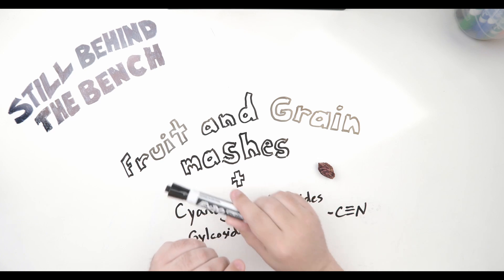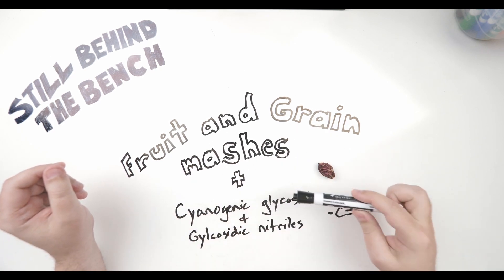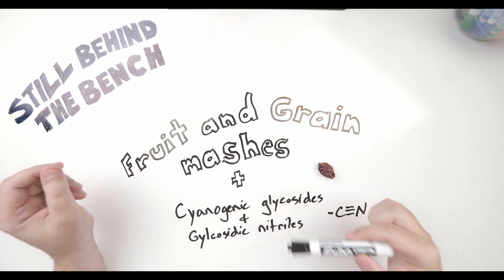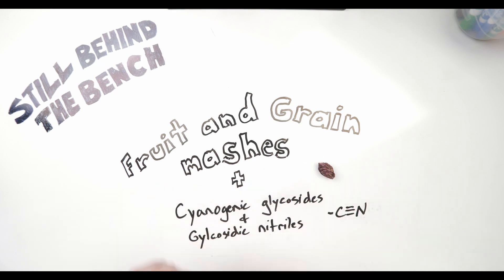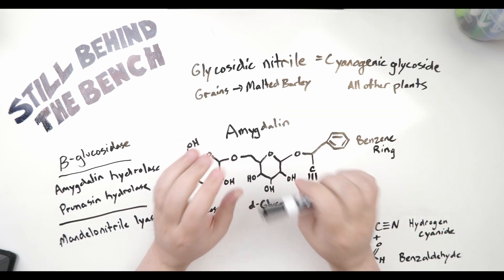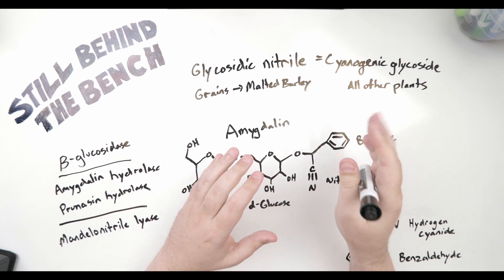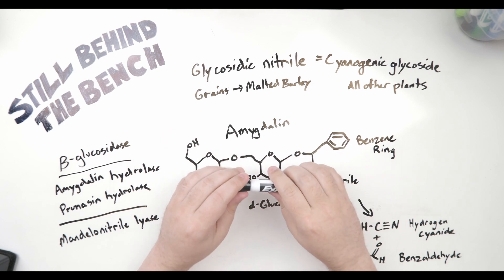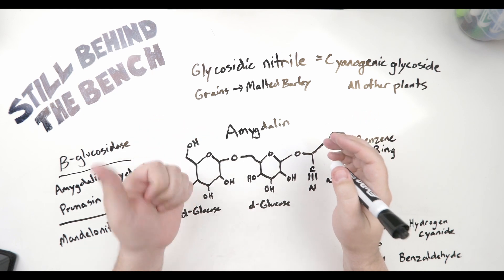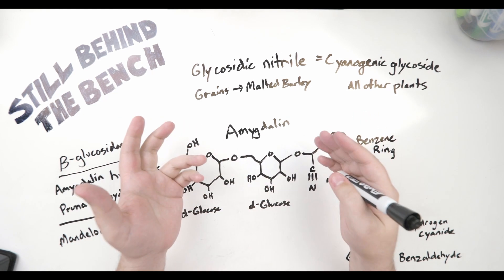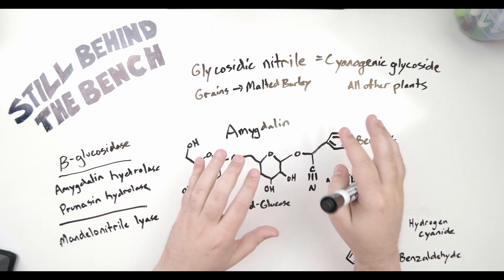For this video I'm going to be talking about fruit and grain mashes, specifically how they pertain to cyanogenic glycosides, glycosidic nitriles, and maybe a little bit about ethyl carbamate. I will be doing a related video mostly about another way that ethyl carbamate is being produced. But for this video I'm going to be talking about your feedstocks — your fruits, vegetables, and grains — as being the source of this issue, and the end point for this issue is always going to be ethyl carbamate.